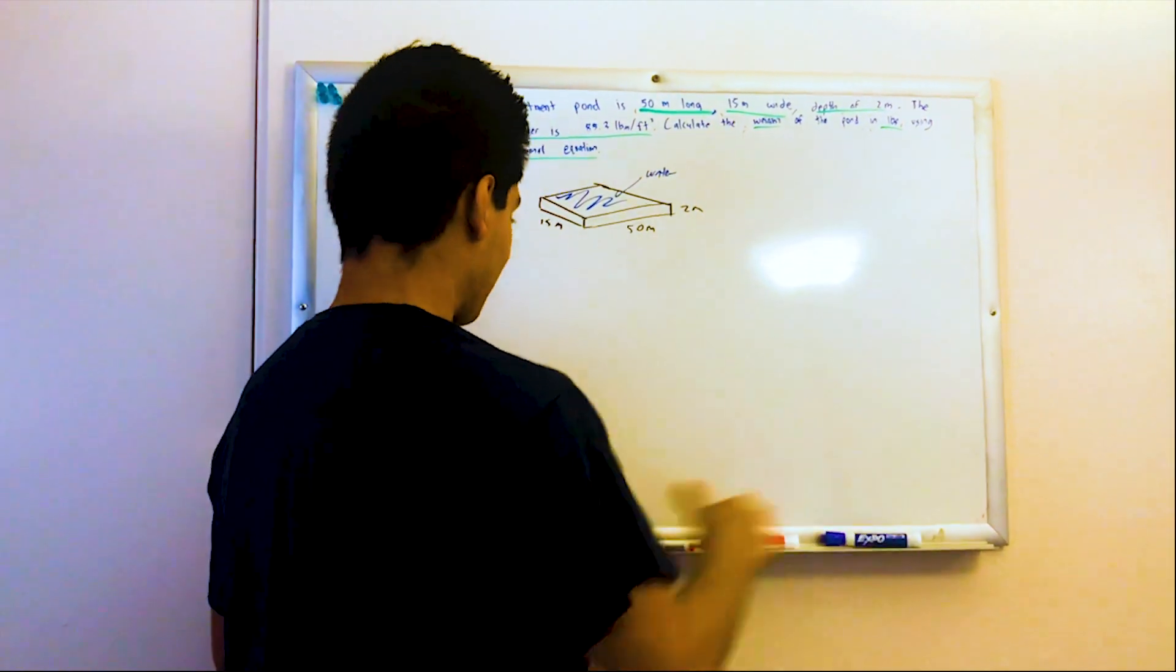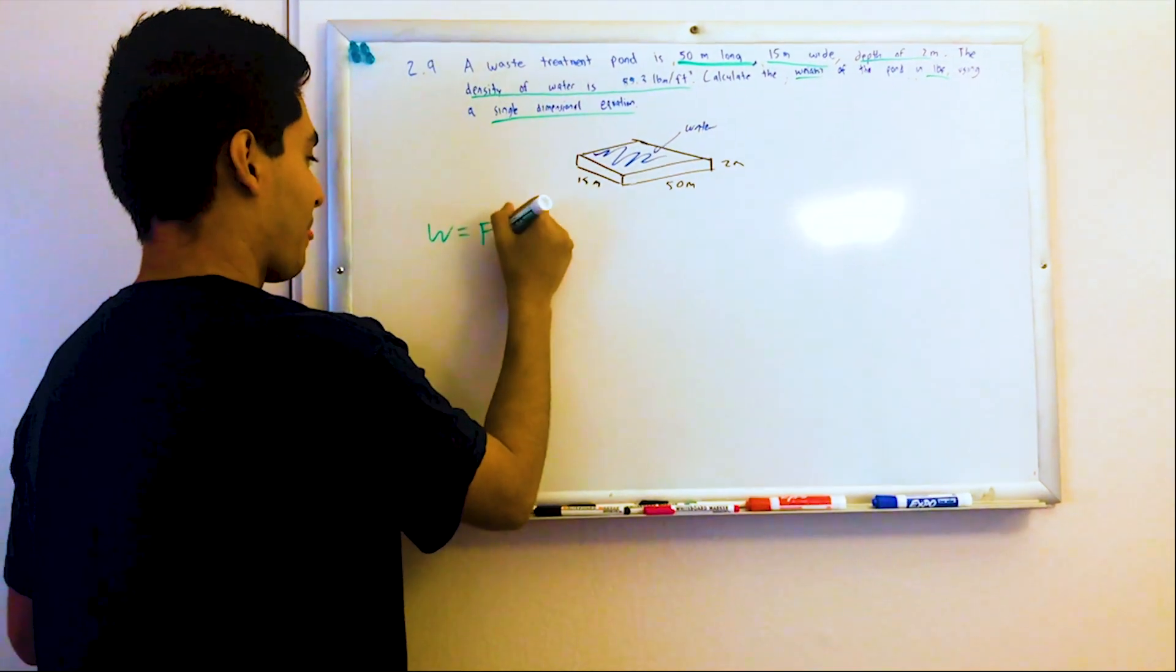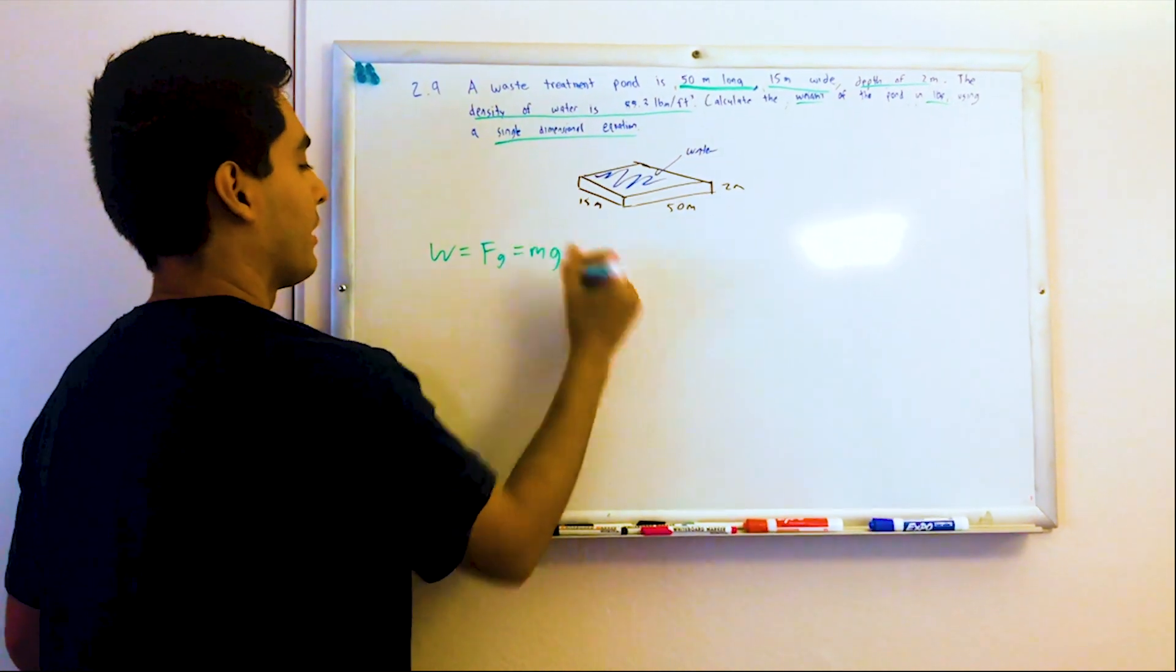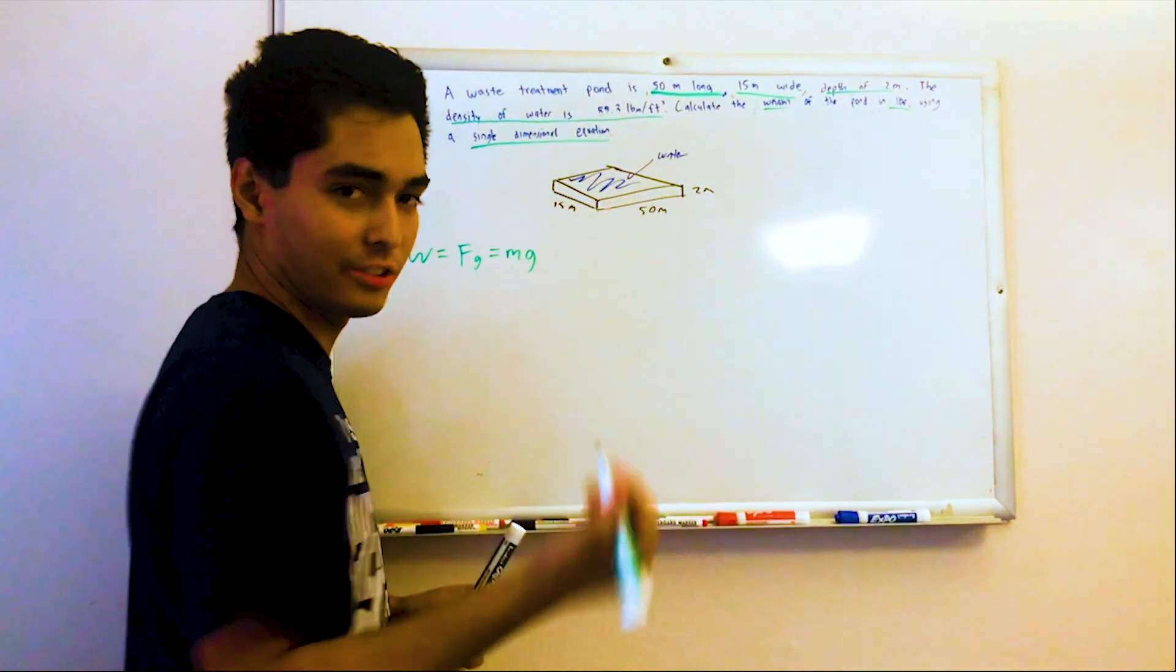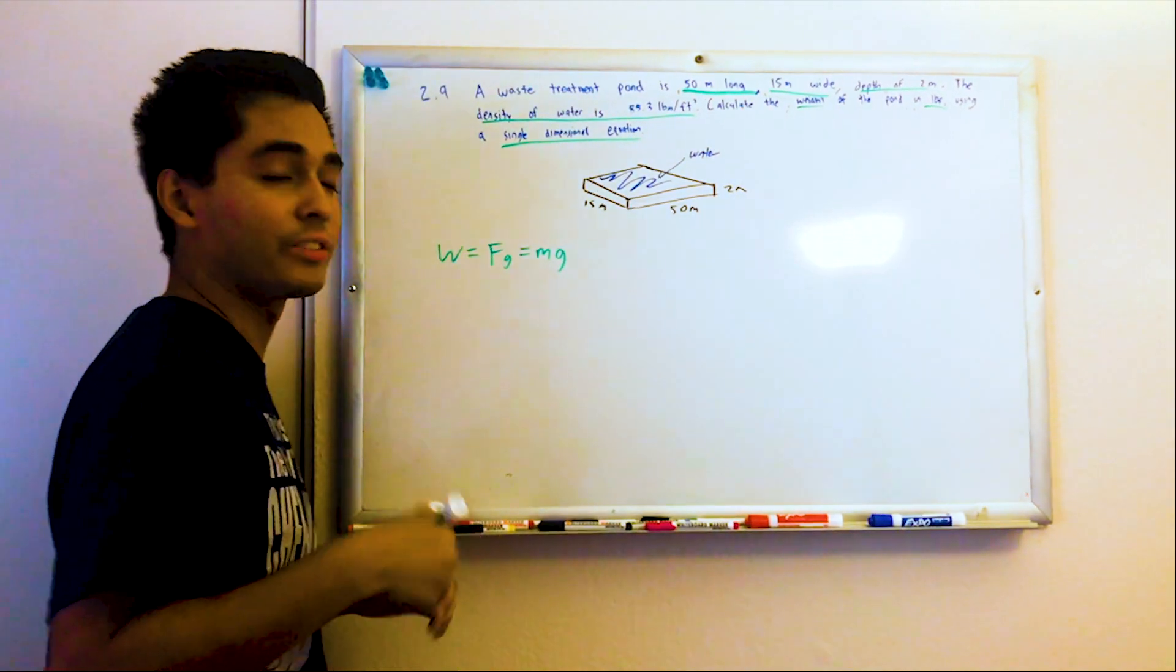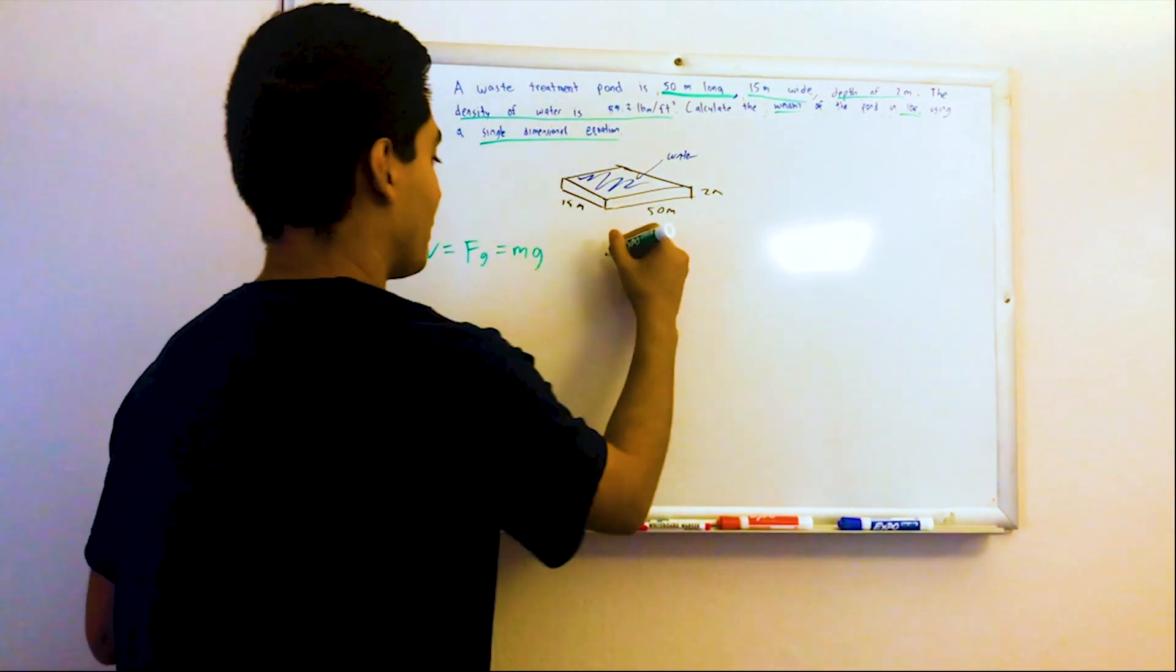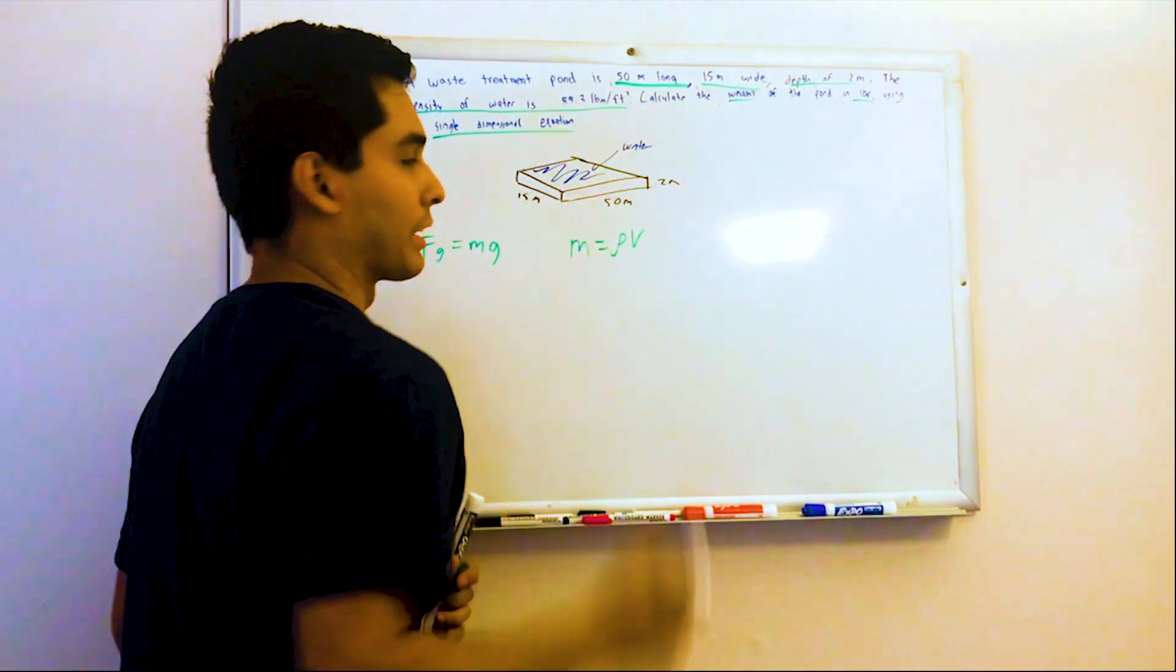So supposedly pretend that's our pond, supposedly that's water. All right, and we want to calculate the weight. So what is weight? That's right, weight is force of gravity, which is mass times gravity, and so we need the mass, which is going to be from density.